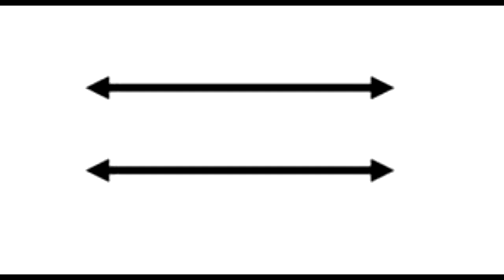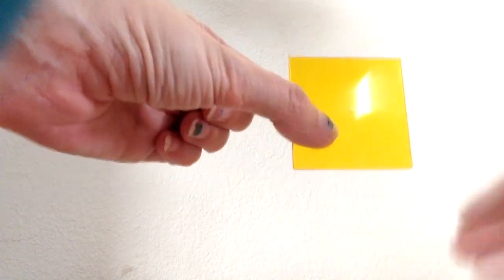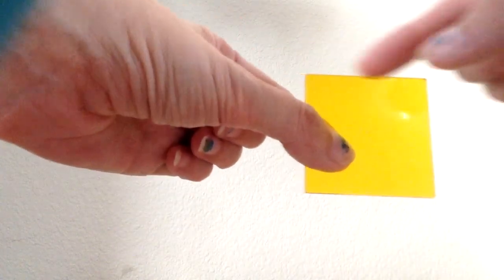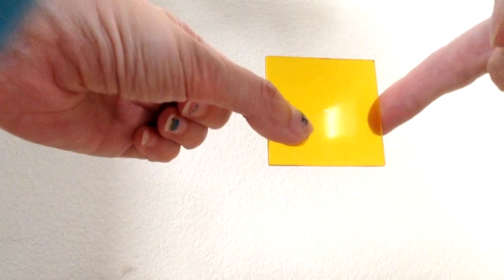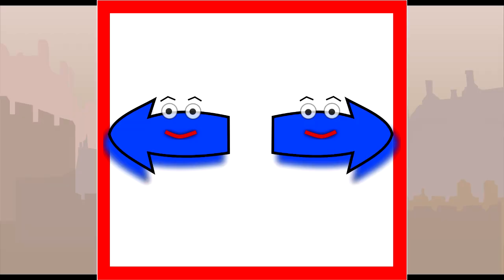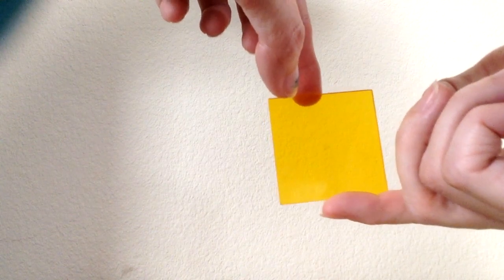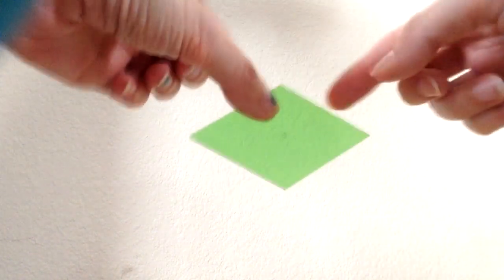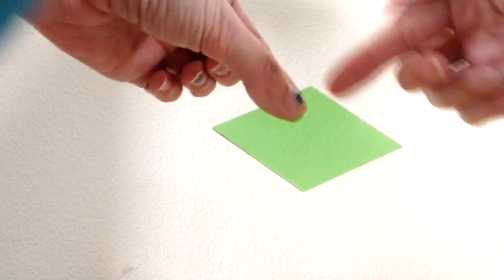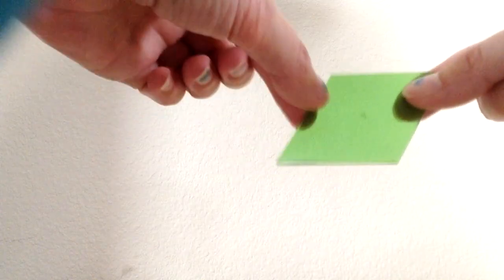Do you remember what parallel lines are? Parallel lines are lines that are always the same distance apart and will never meet. So in this square, all of these lines are parallel — they're always the same distance apart and they'll never ever meet. So this has got two pairs of parallel lines, two here and two here. This square has parallel lines on these two sides and on these two sides, so this is a parallelogram. This is a parallelogram because these lines that are opposite are parallel to each other, and these lines that are opposite are parallel to each other.